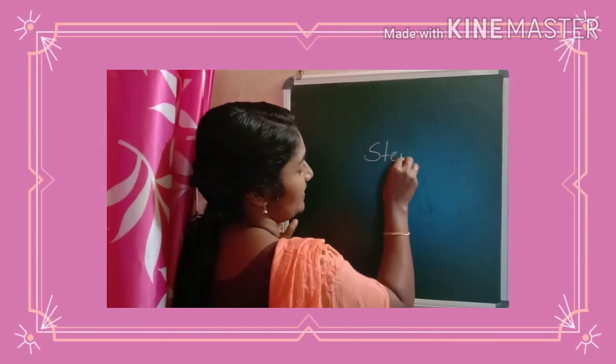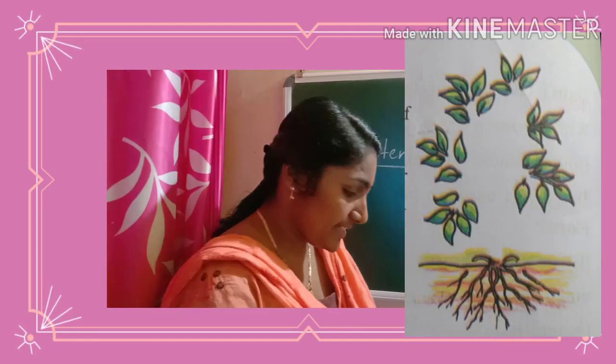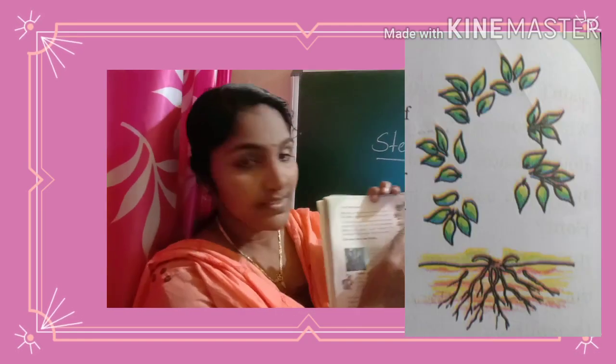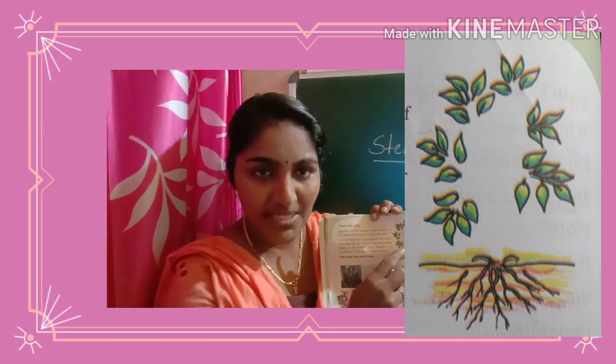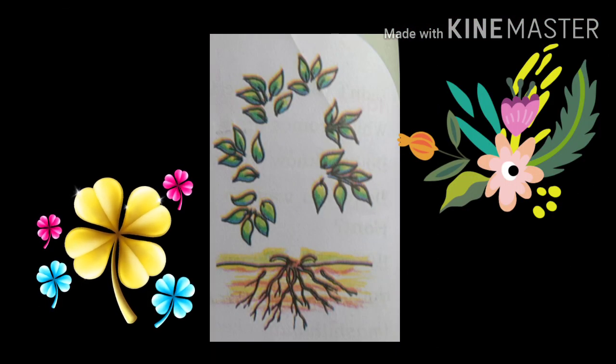In your textbook page number 18, you can see a picture. Look, one part is missing. Which part of the plant is missing? Yes, the stem is missing. Can you draw it? We cannot imagine the condition of a plant without a stem.